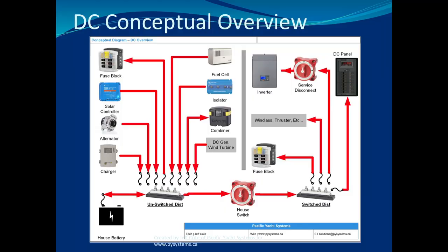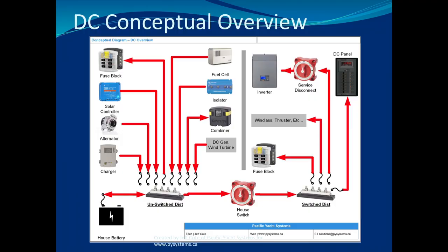The big concept we're going to be talking about a lot — and I'll be mentioning this repeatedly until it sinks in — is this concept of unswitched distribution. Notice the batteries right here. A battery bank can be made of one, ten, or twenty batteries. We did a big boat recently that had 32 batteries on board. There is no limit other than budget and space. But in this conceptual diagram, I'm showing a house battery. An unswitched distribution means everything before the switch — meaning it's always on.